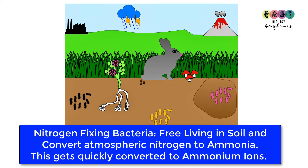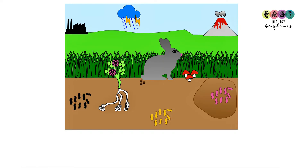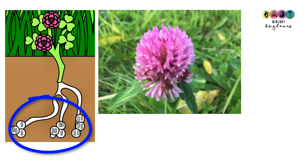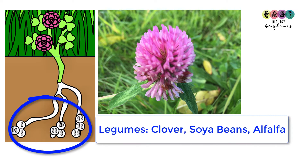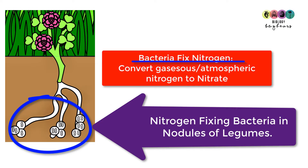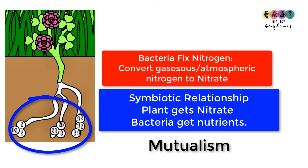In addition to the nitrogen-fixing bacteria that are free in the soil, there are also bacteria that live in the root nodules of legumes. Legumes are types of plants — clover, soya beans, and alfalfa being examples. These bacteria that live in the root nodules have a mutualistic relationship with the plant: the bacteria fix nitrogen, converting atmospheric nitrogen to nitrate so the plant has a source of nitrate, and in return the plant gives the bacteria nutrients. So it's symbiosis — specifically mutualism.